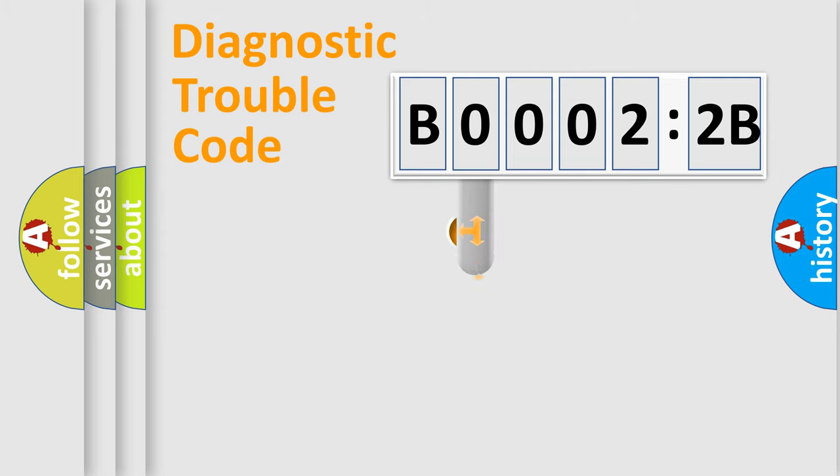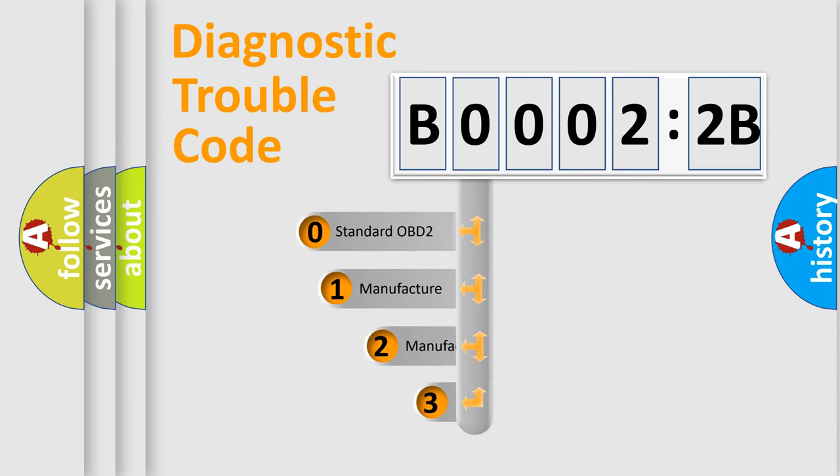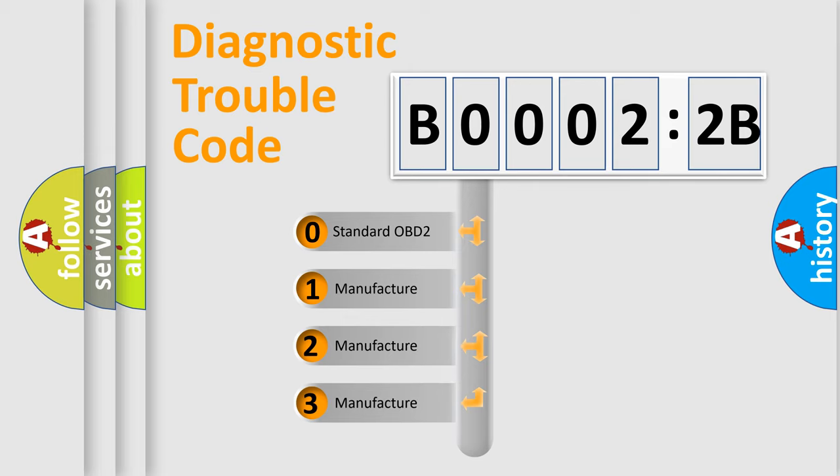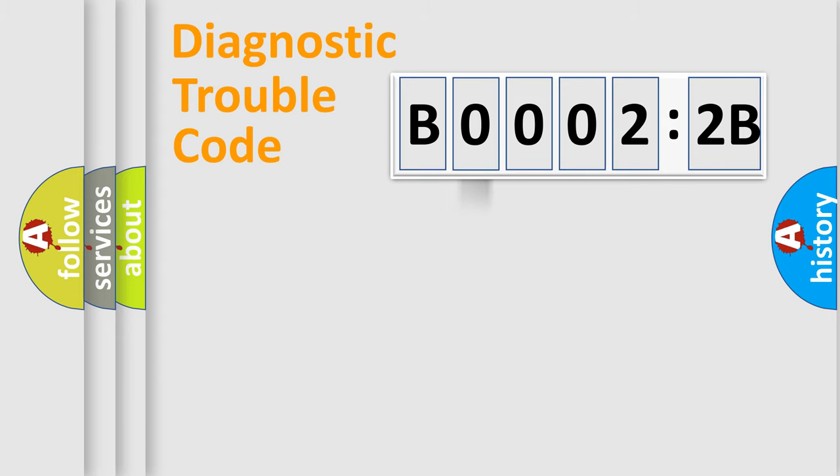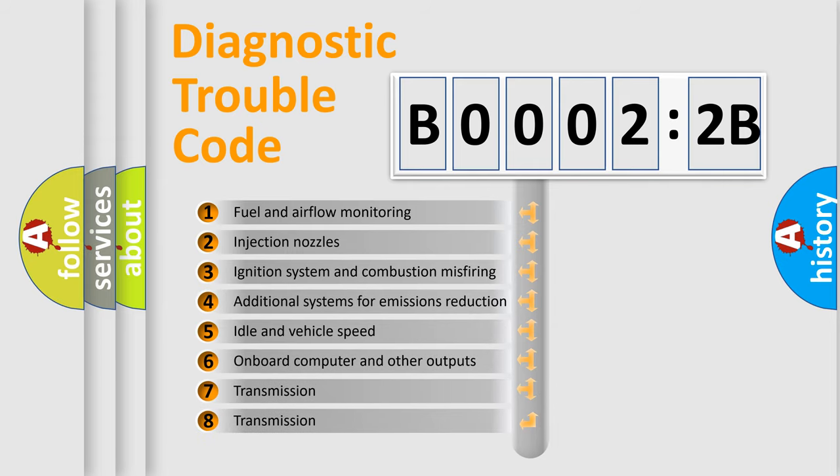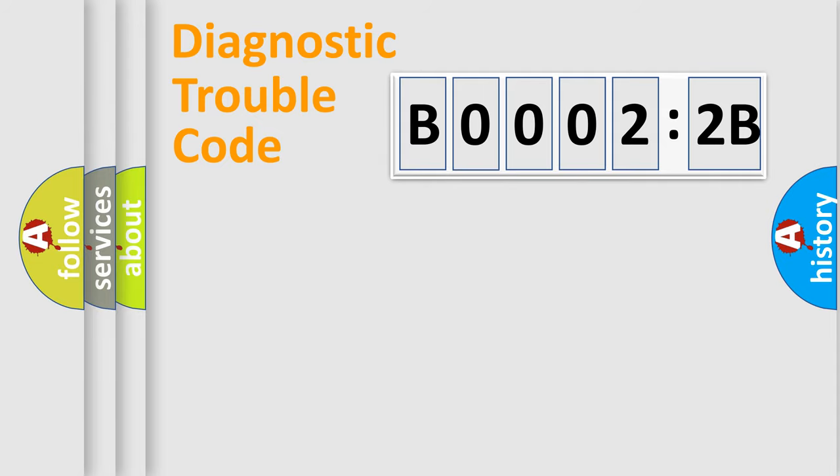This distribution is defined in the first character code. If the second character is expressed as zero, it is a standardized error. In the case of numbers 1, 2, or 3, it is a manufacturer-specific error. The third character specifies a subset of errors. The distribution shown is valid only for the standardized DTC code. Only the last two characters define the specific fault of the group.